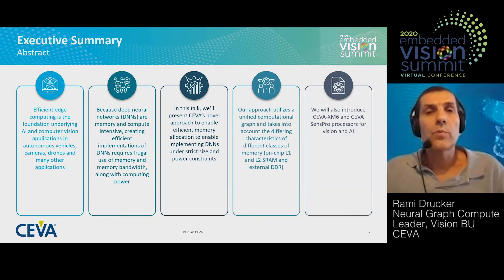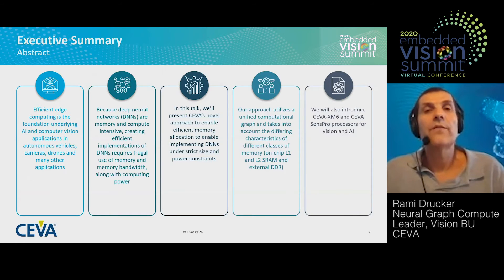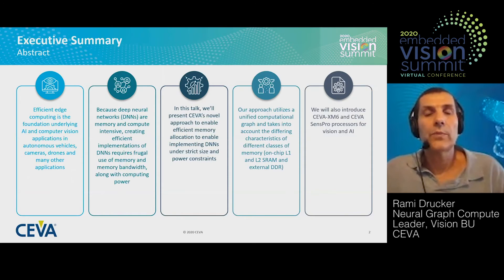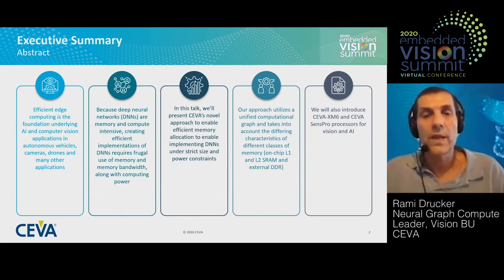In this talk, we'll present CIVA's novel approach to enable efficient memory allocation, and therefore enable implementations of neural networks under strict size and power constraints, as required in edge computing.